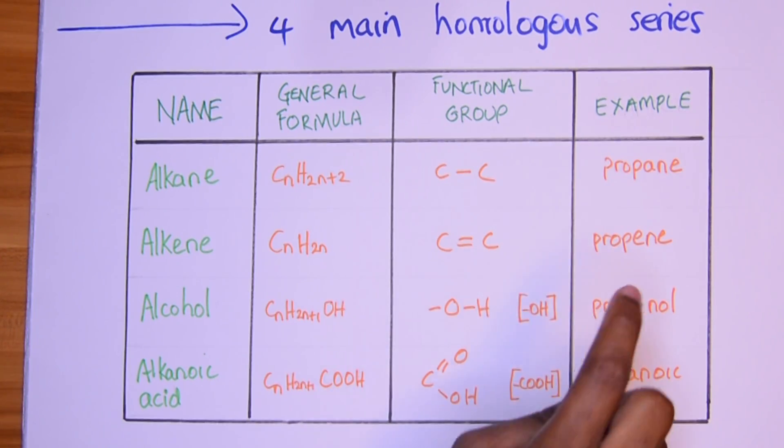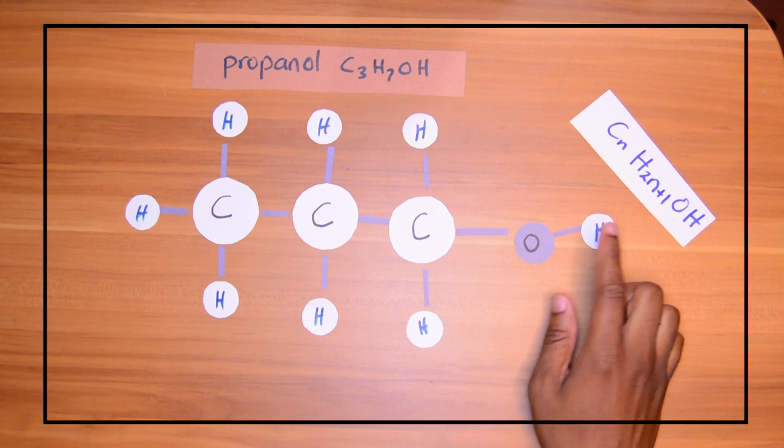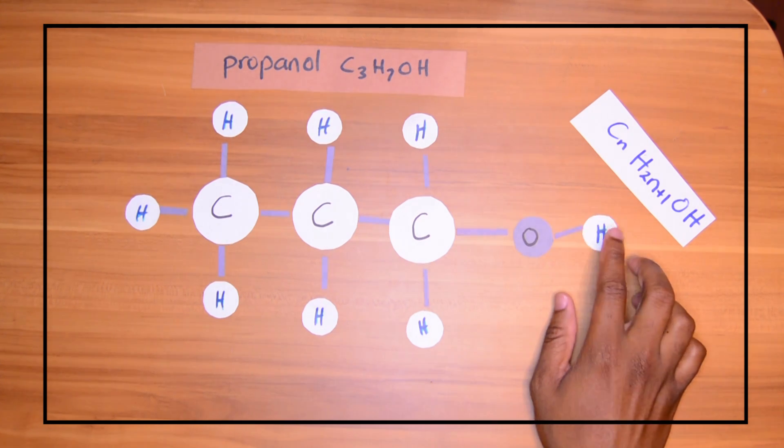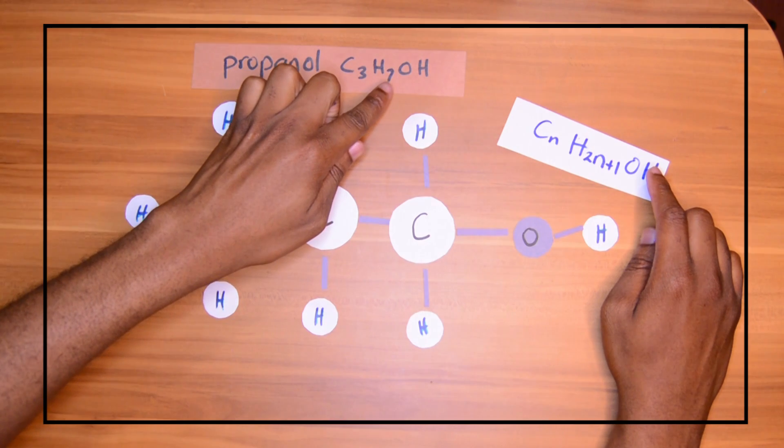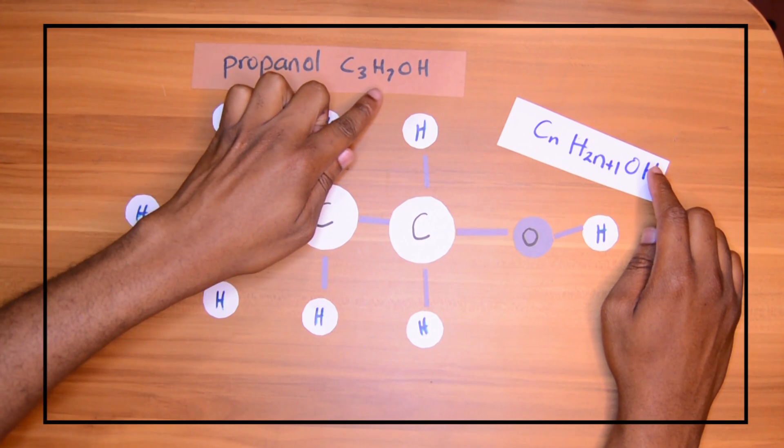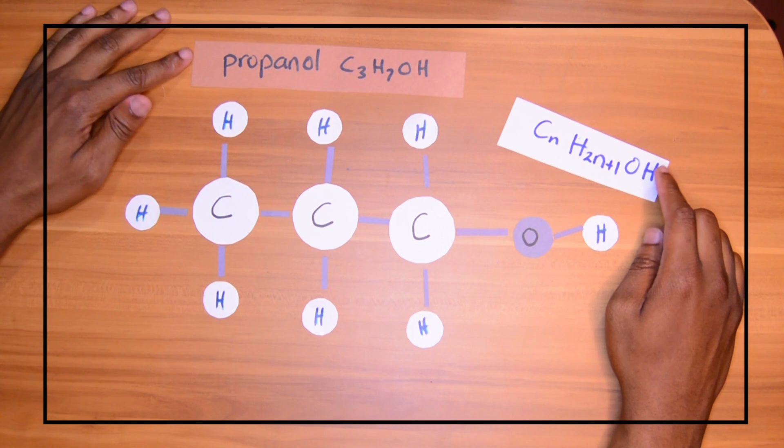And we have propanol. So it's like if we stuck in an O right here, and all of a sudden it turned into alcohol. Remember, OH is the functional group of alcohol, the hydroxyl group. We have twice the number of hydrogens plus one. So three times two is six plus one, and then we have an OH added on to the end.